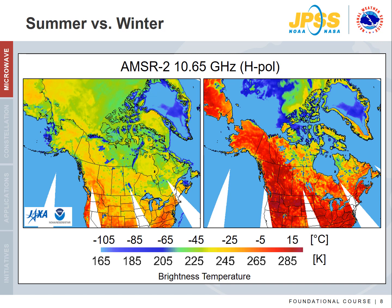Looking at two images using the 10 GHz channel — one during winter and one during summer — you may correctly guess that the one on the left is from winter and the one on the right is from summer. With this color table, reds correspond to warmer temperatures seen throughout the US and Canada in the summer image, while colder greens and yellows are more pronounced in winter. However, the ocean appears extremely cold and is saturated in this color table.